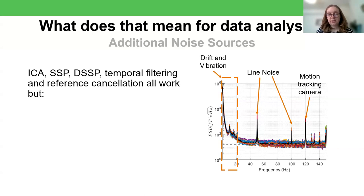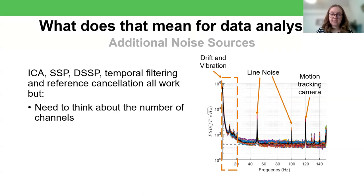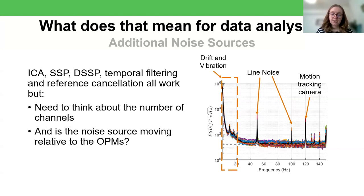The really good news is that ICA, SSP, DSSP, temporal filtering and reference cancellation all still work. We just need to think about how we apply them. So we need to think about the number of channels, because an OPM system may not have the same number of channels as a squid system. And a lot of these methods may rely on spatial oversampling.